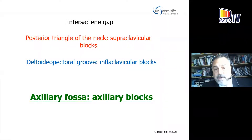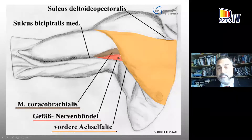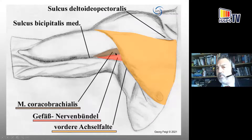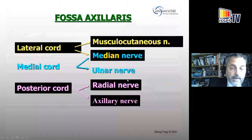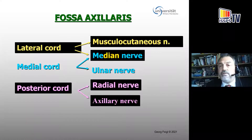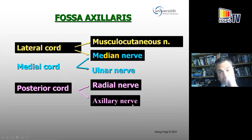Let's go finally to the axillary fossa. In this axillary fossa, you find the nerve structures accompanied by the artery and vein, the coracobrachialis muscle — a very important landmark in your ultrasound image — and the greater muscles like pectoralis major and latissimus dorsi. In this axillary fossa, you get the final division of the cords into the nerves: from the lateral cord you get the musculocutaneous nerve, from the medial cord the ulnar nerve, and from the posterior cord the radial and the axillary nerve — where the axillary nerve might not be reached by all block techniques.